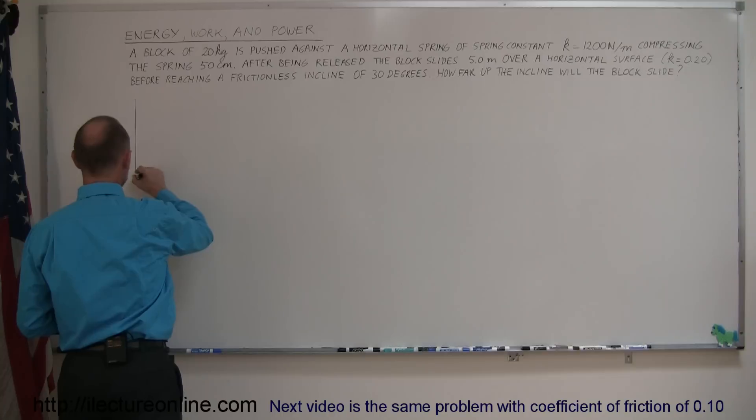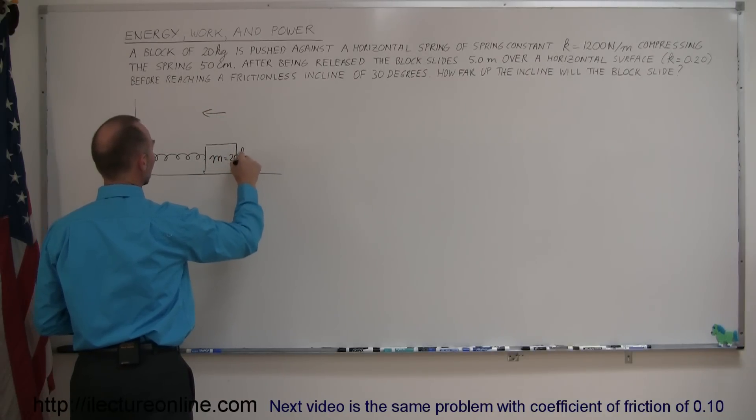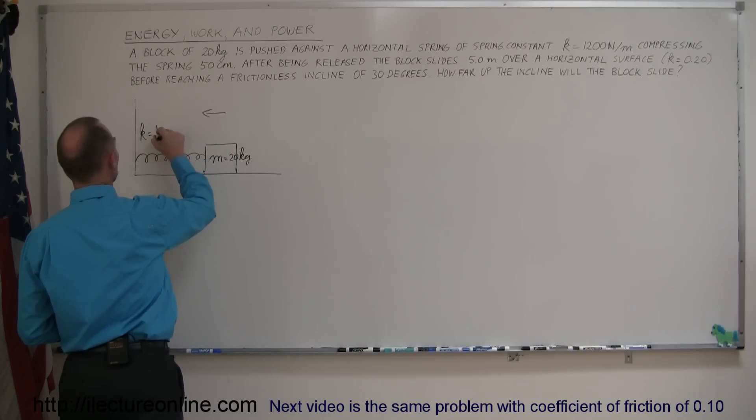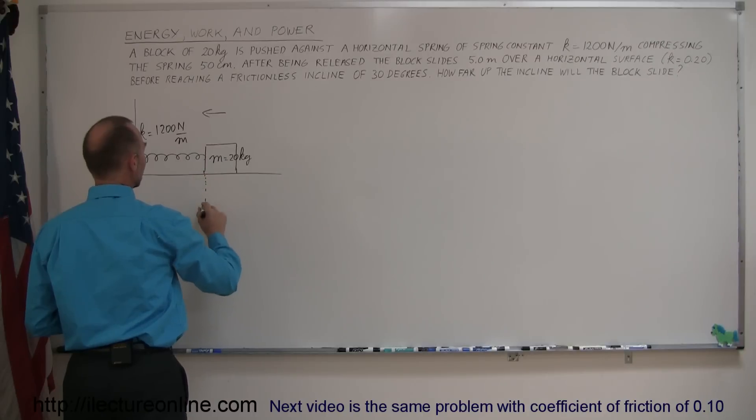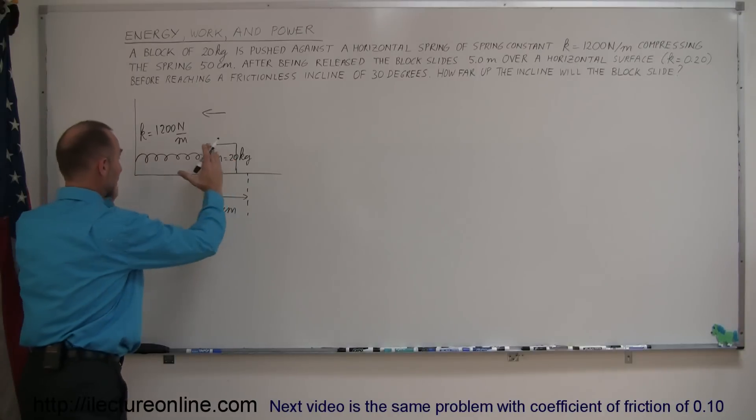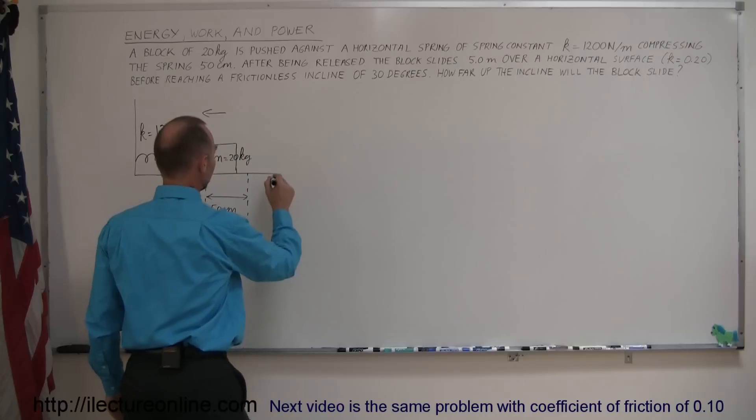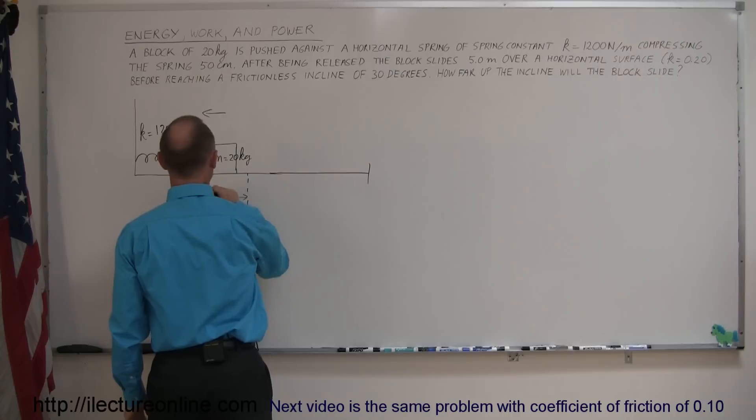Let's say we have a horizontal surface with a spring. We have a block being pushed against the spring. The mass of the block is equal to 20 kilograms. The spring constant k is equal to 1,200 newtons per meter. Let's assume this is the compressed state of the spring, compressed a distance of 50 centimeters. So we have stored energy in the spring. When we let go, the block will slide over the horizontal surface over a distance of 5 meters.